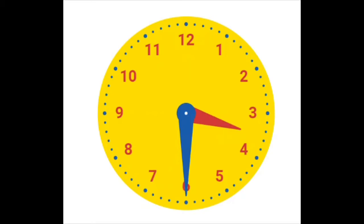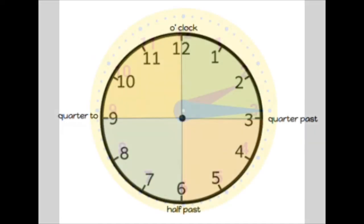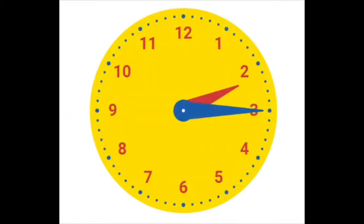Review how to write digital time using hours and minutes. Tell students that time is read in many different ways, including using the language quarter past, quarter to, and half past. Show students a model of a clock partitioned into fourths, quarters, or halves. Tell students that each quarter of a clock is 15 minutes. Show students a model of a clock and ask: what time is shown? 2:15. Ask students: what is another way to read 2:15 on the clock? A quarter past 2. Explain that because the minute hand is on the 3, this time can be read as a quarter past the hour or 2:15. Continue practicing reading times using the quarter past, quarter to, and half past language.